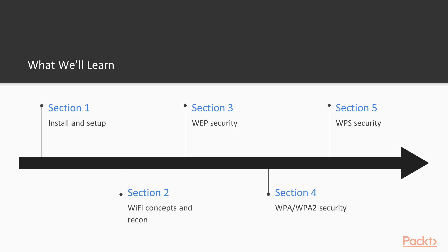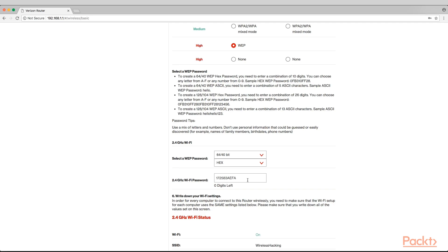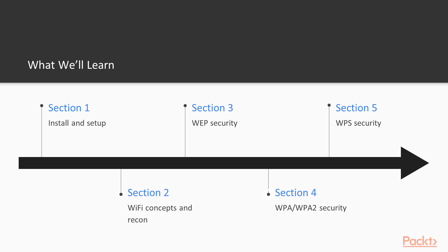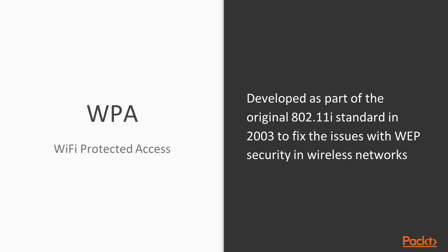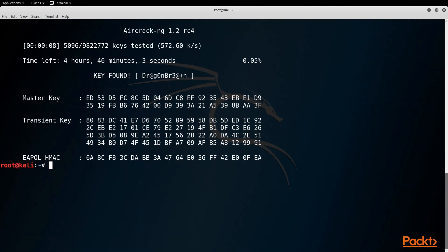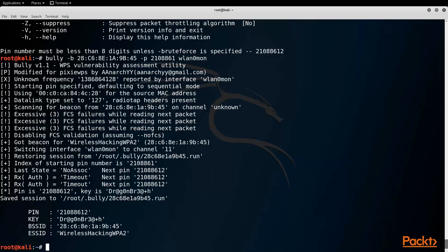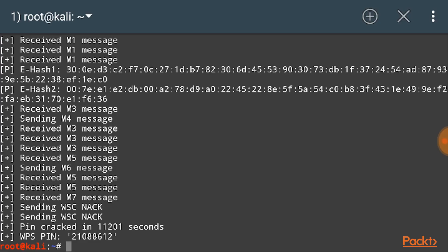Next, we're going to go into WEP security. We're going to set up a WEP access point and then crack it using some brute force attack tools. Next, we're going to move into WPA and WPA2 security, which is what is considered modern security in wireless networks. We're going to attack those networks with a dictionary attack. Then we're going to move into WPS, which is interesting because we're still able to use brute force techniques and crack any WPS network out there, both in Kali Linux as well as in NetHunter.